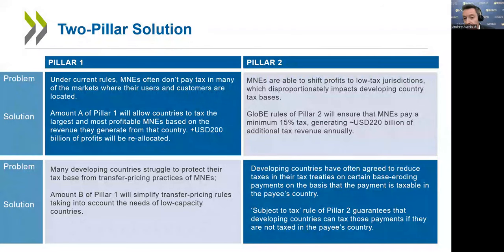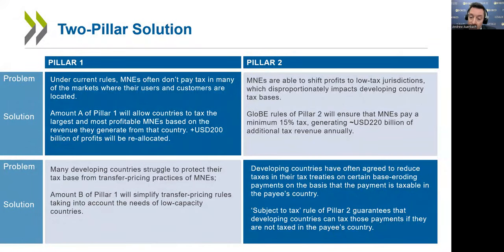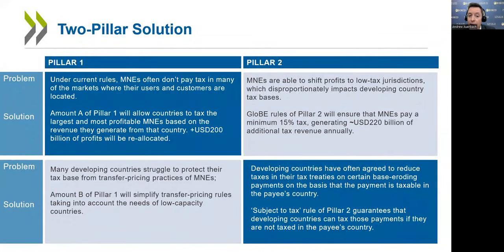Pillar 2 will allow countries to get rid of wasteful tax incentives. Finally, the subject to tax rule means that developing countries which have given up the right to tax base-eroding payments like interest and royalties — often used by multinationals to shift profit from a high-tax country to a low-tax country — will be subject to at least a minimal rate of tax. That's for the benefit of developing countries to ensure their tax base is protected.